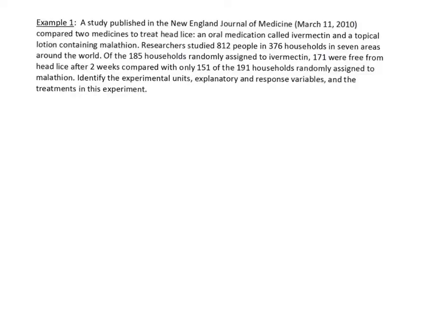Here's our first example. We're going to identify experimental units, explanatory and response variables, and treatments. This one is tricky because they mention 812 people in 376 households, but they assigned 185 households to the medicine ivermectin. So the experimental units are actually the households, not the individual people.